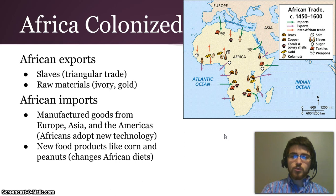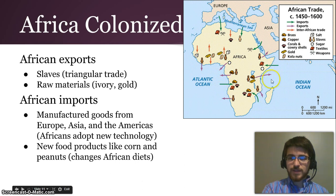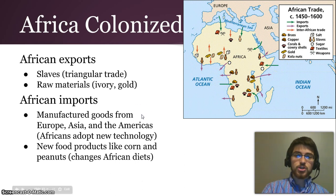Originally, most trade went across the Sahara Desert. But all of a sudden, most trade shifted to going along the coastlines. That's an important shift away from the previous traditional economic systems in Africa.